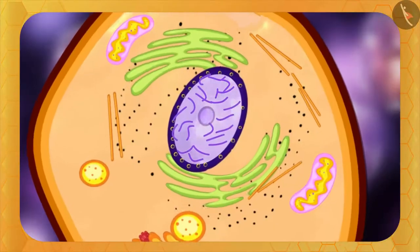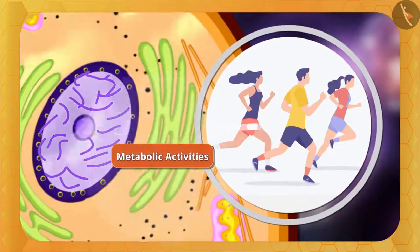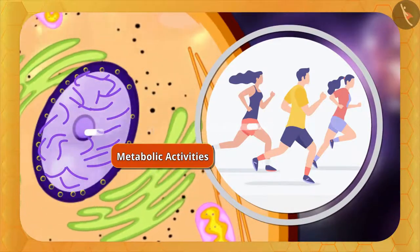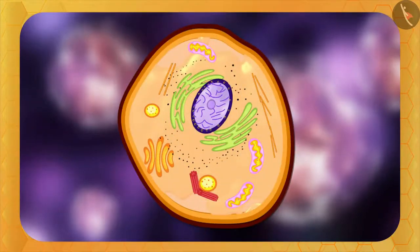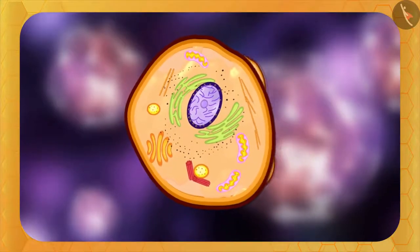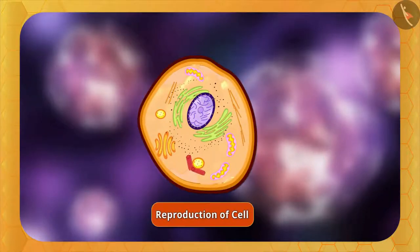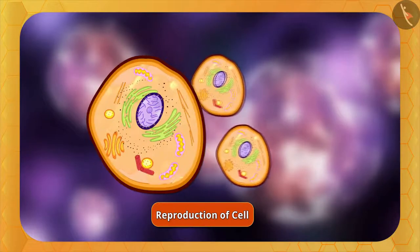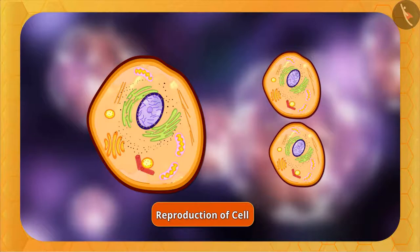The nucleus is the headquarter of the cell which controls and directs all metabolic activities such as production of energy. It determines the overall growth and maturity of the cell and also plays a central role in cellular reproduction. In cell reproduction, one cell divides into two new cells, and the information and instructions in the new cell go through the nucleus.